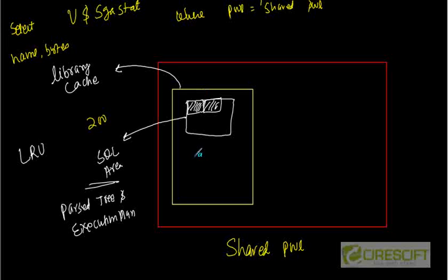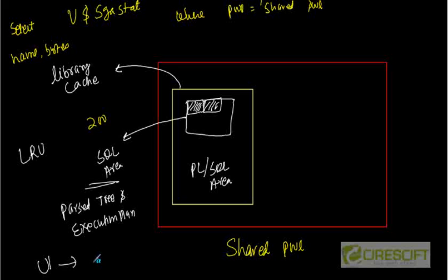The remaining area in the library cache is called the PL/SQL area. Whenever you run a stored procedure or function, the parsed value of that PL/SQL procedure is loaded into this area. This is why PL/SQL is faster: for example, if user one executes 'EXEC P1', procedure P1 is compiled, parsed, and stored in the PL/SQL area. The next time user two runs 'EXEC P1', it reuses that compiled version, which is much faster.